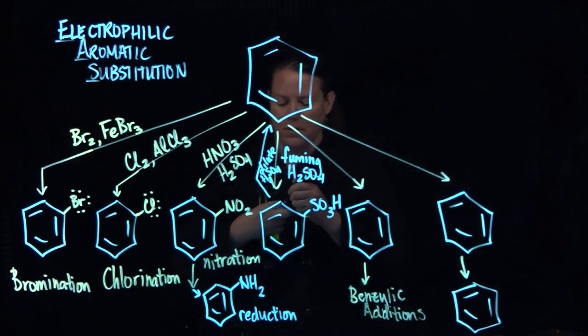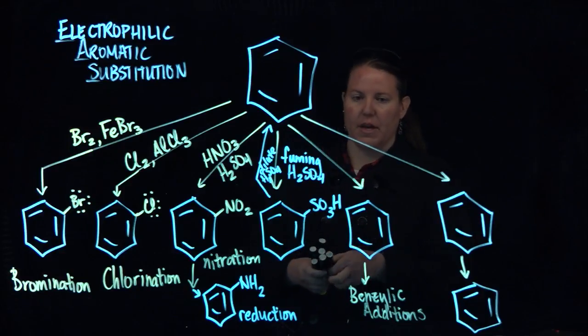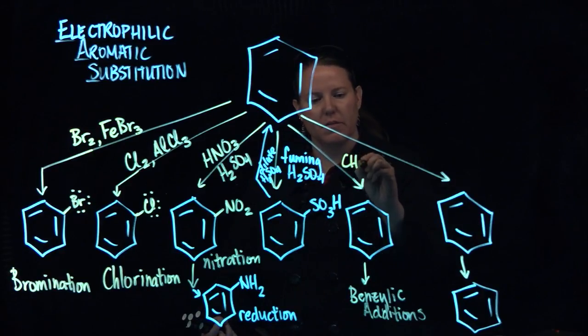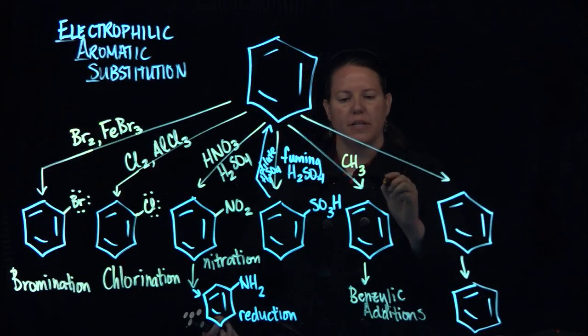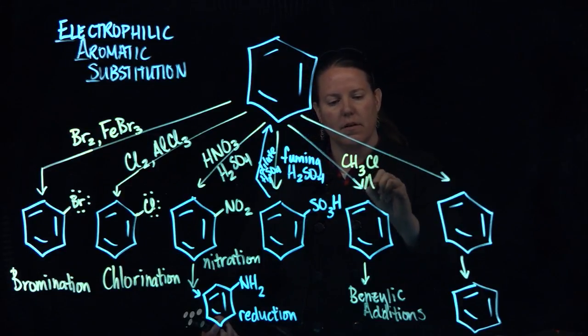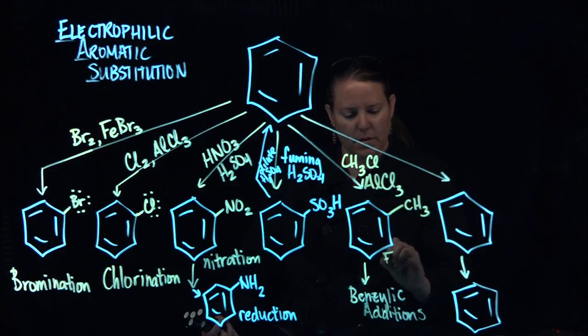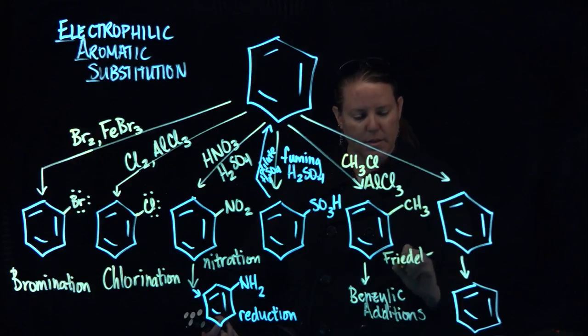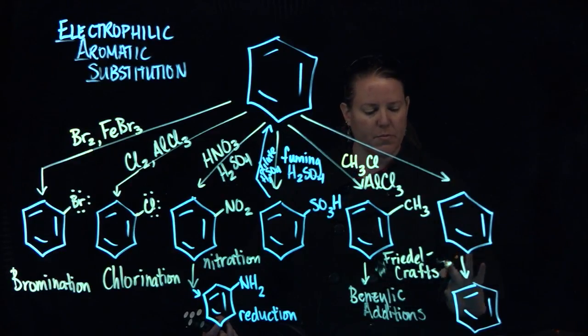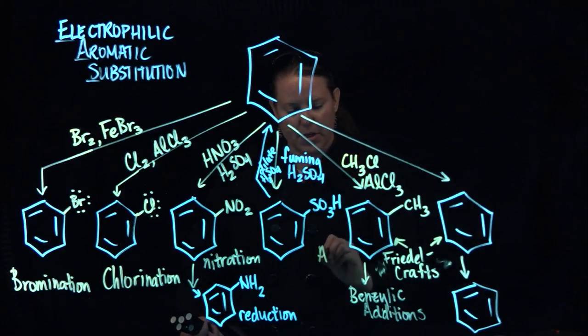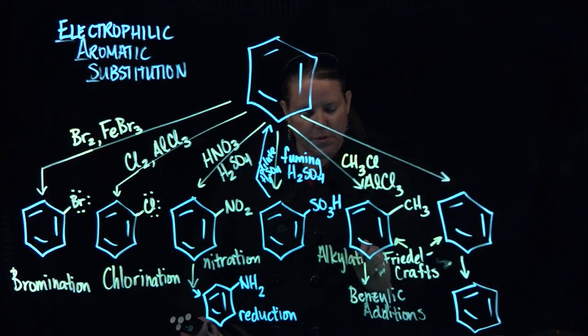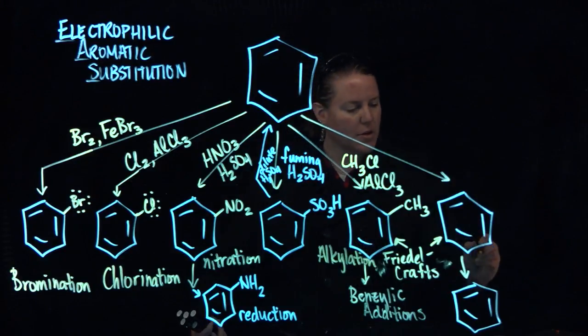Of course there's the Friedel-Crafts moment that I was talking about. This is Friedel-Crafts alkylation. So it could be CH3Cl often, and that's going to put a CH3 on. We'll call that Friedel-Crafts. Both of these are Friedel-Crafts. Actually, I should point that back up towards the ring. That's the Friedel-Crafts piece. This is called the alkylation. You can guess why it's called the alkylation because it puts on an alkyl group.